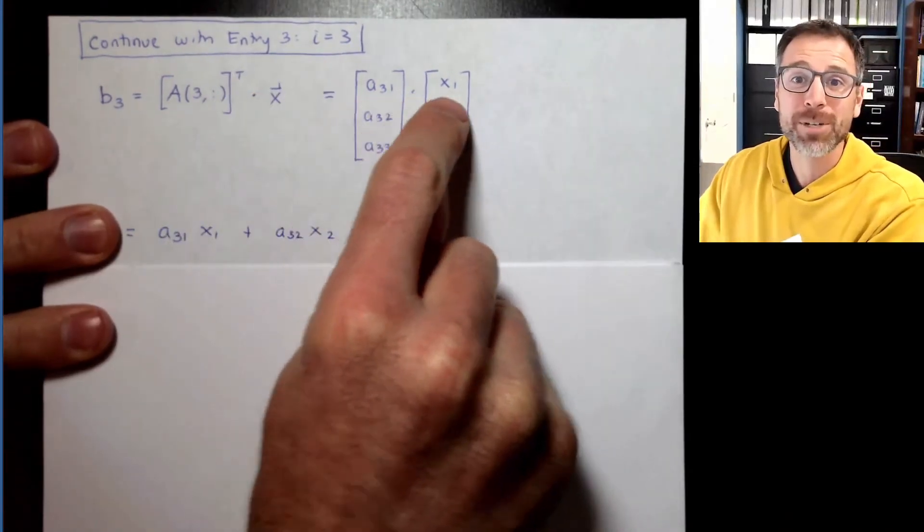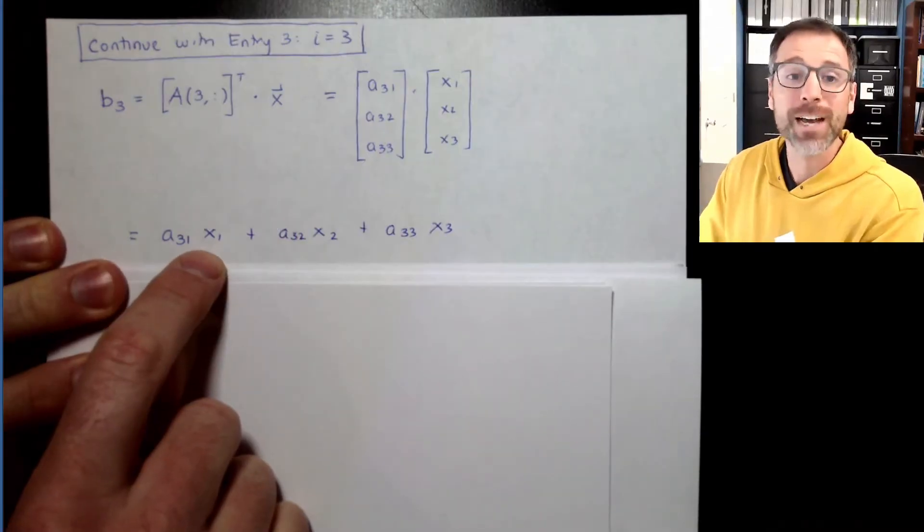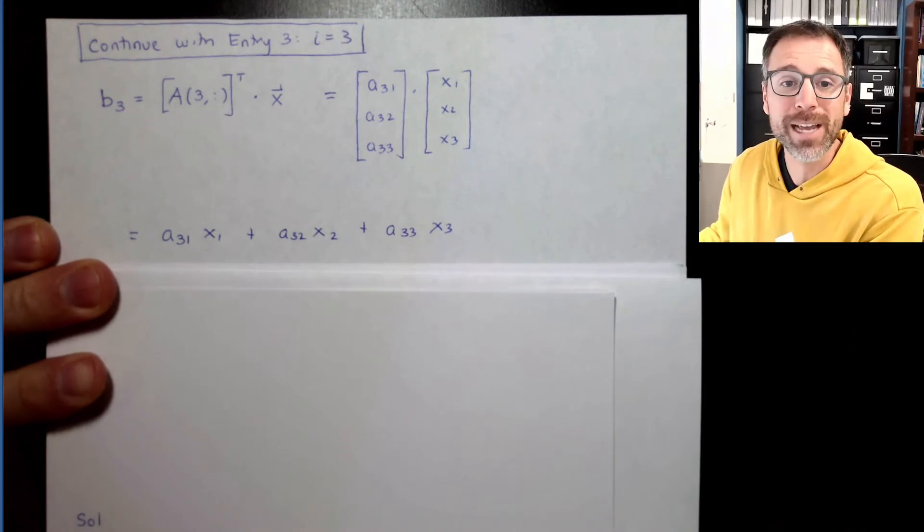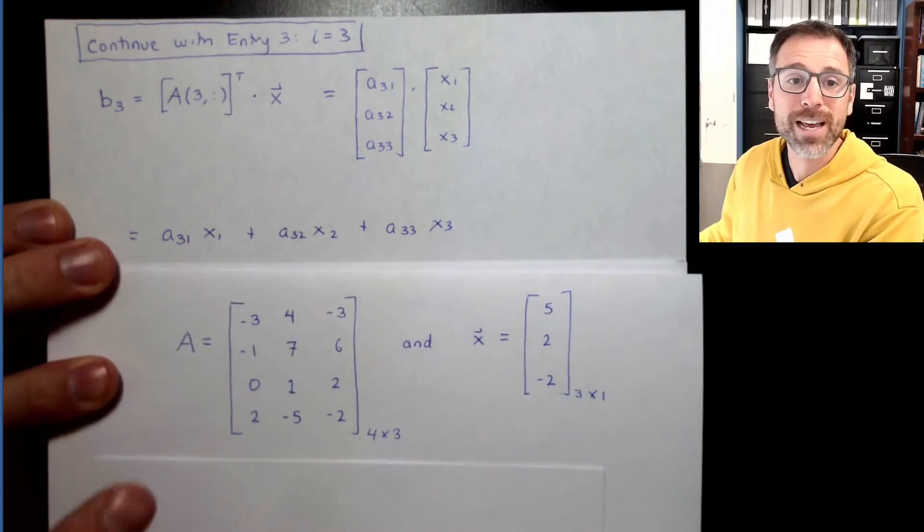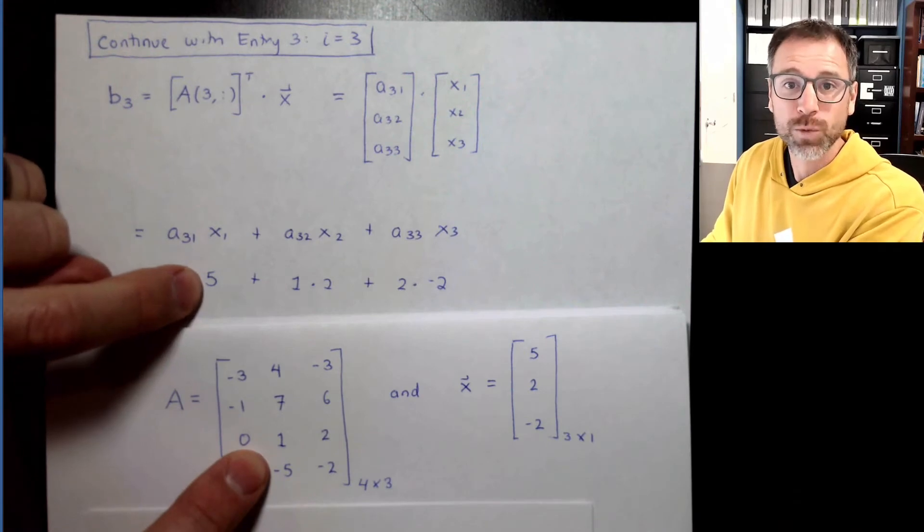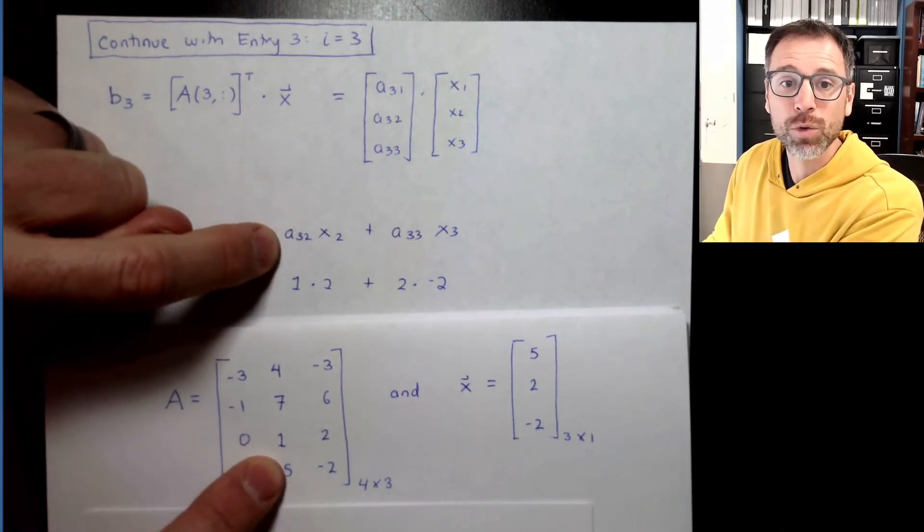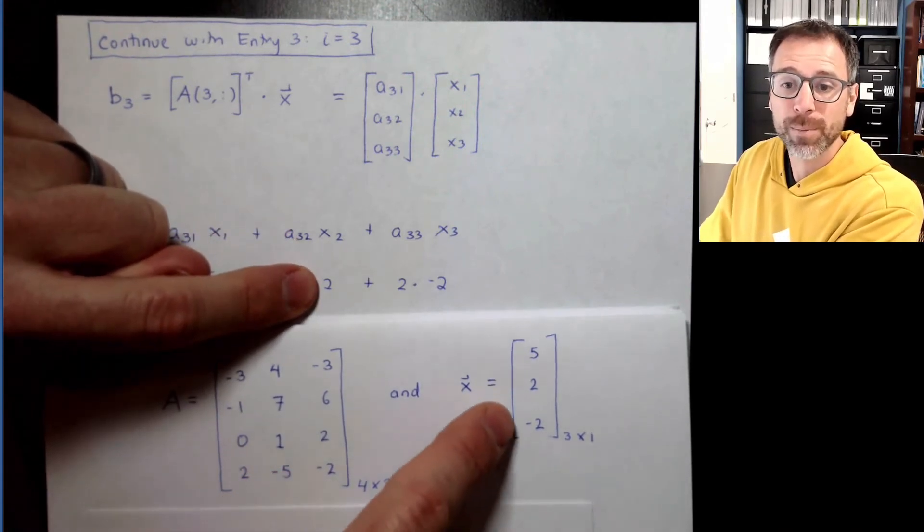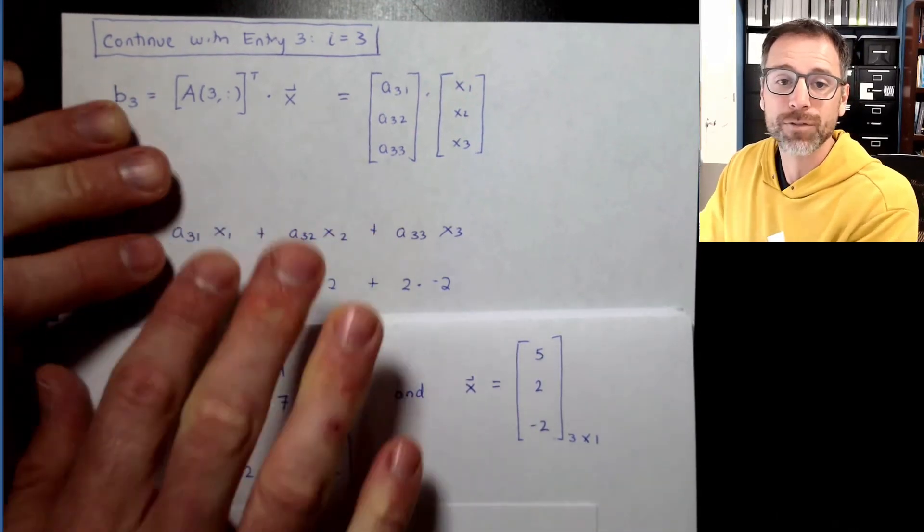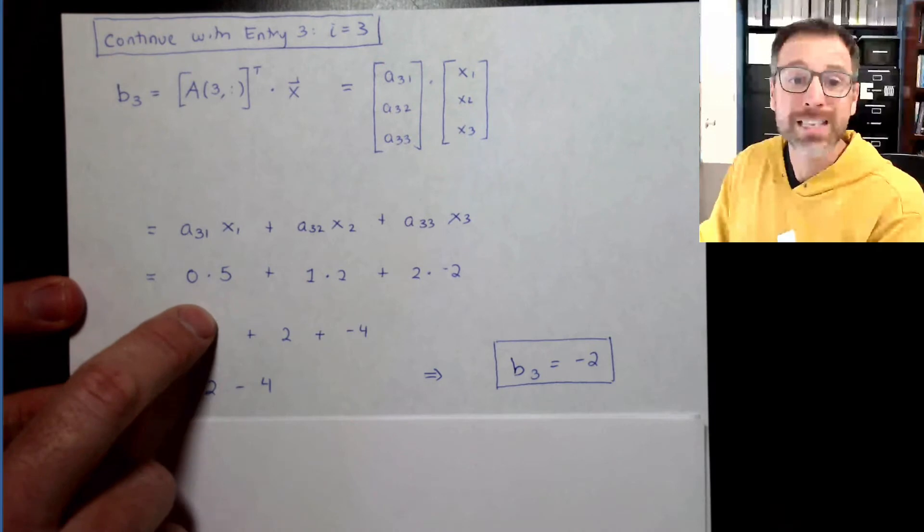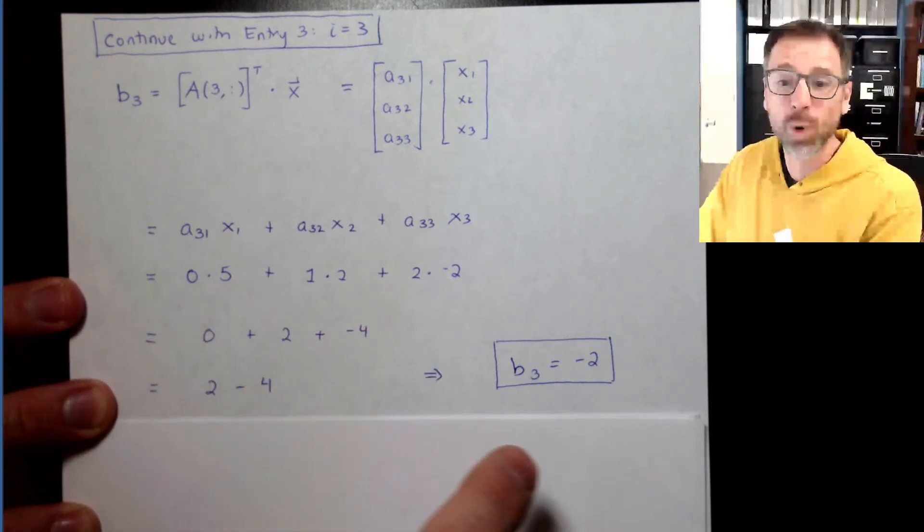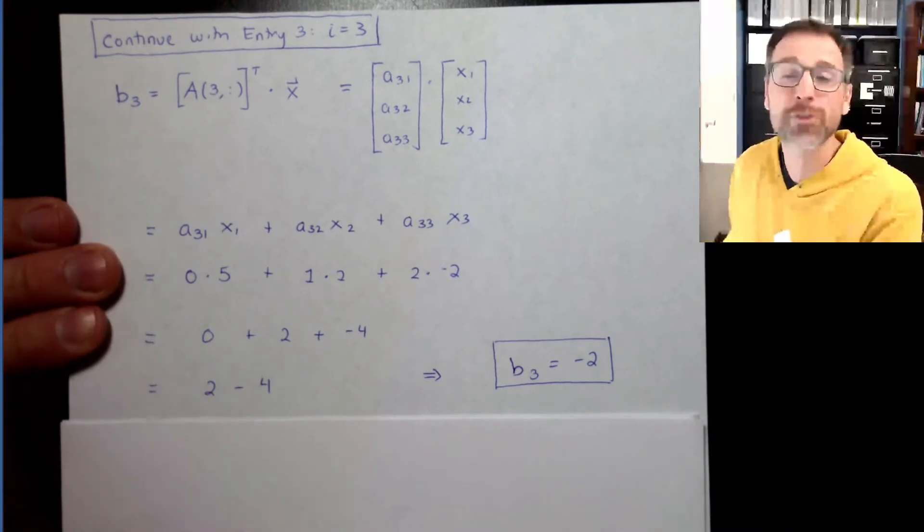When I take the dot product, I multiply each part: A_31 times X_1 plus A_32 times X_2 plus A_33 times X_3. Let's remind ourselves what these different values were. A_31 was 0, X_1 was 5, A_32 was 1, X_2 was 2, A_33 was 2, X_3 was negative 2. We can do the math: 0 plus 2 plus negative 4. 2 minus 4 is of course negative 2, so the third entry must be negative 2.